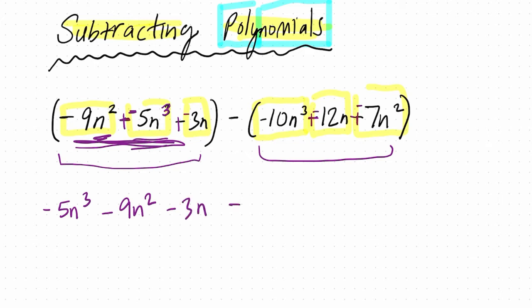Now in the second polynomial, I'm going to reorder that as well. I have negative 10n cubed as the first term. That's the biggest power. There's my next biggest power, minus 7n squared, and then finally minus 12n. So now this helps me because now I have my biggest powers first, and then my second biggest powers, and then finally the smallest powers here.